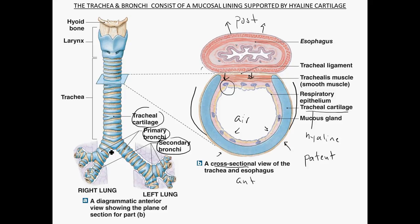The branching of the bronchi is not even. The right bronchus diverges at a steeper, more vertical angle compared to the left, which branches at a more obtuse angle. Consequently, if a piece of food, dust, or other material makes it all the way down, the tendency is for the blockage to enter the right lung rather than the left, because the right side is more of a straight drop. This can lead to a blockage requiring the Heimlich maneuver.